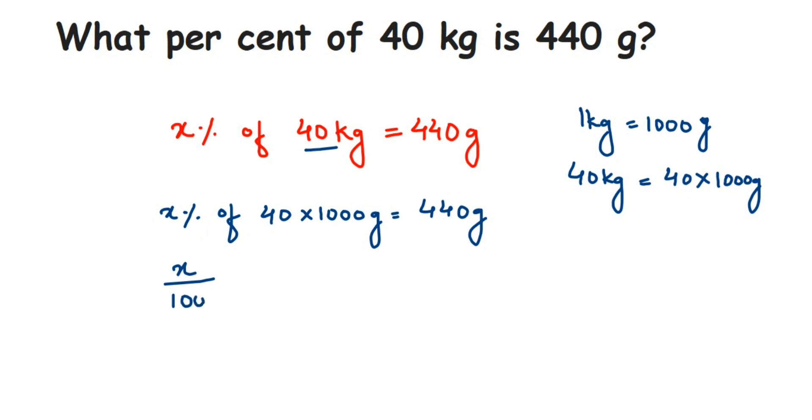And 'of' means multiplication. So this 40 multiplied by 1000 is equal to 440. Now we have to just find the value of X. We have to cancel the numbers, transpose this to the other side, cancel the numbers and simplify it. So here I'm going to cancel 100 and 1000 here itself. 100 once, 100 tens is 1000. So this will be like X multiplied by 40 times 10 is 400. 400 is equal to 440.